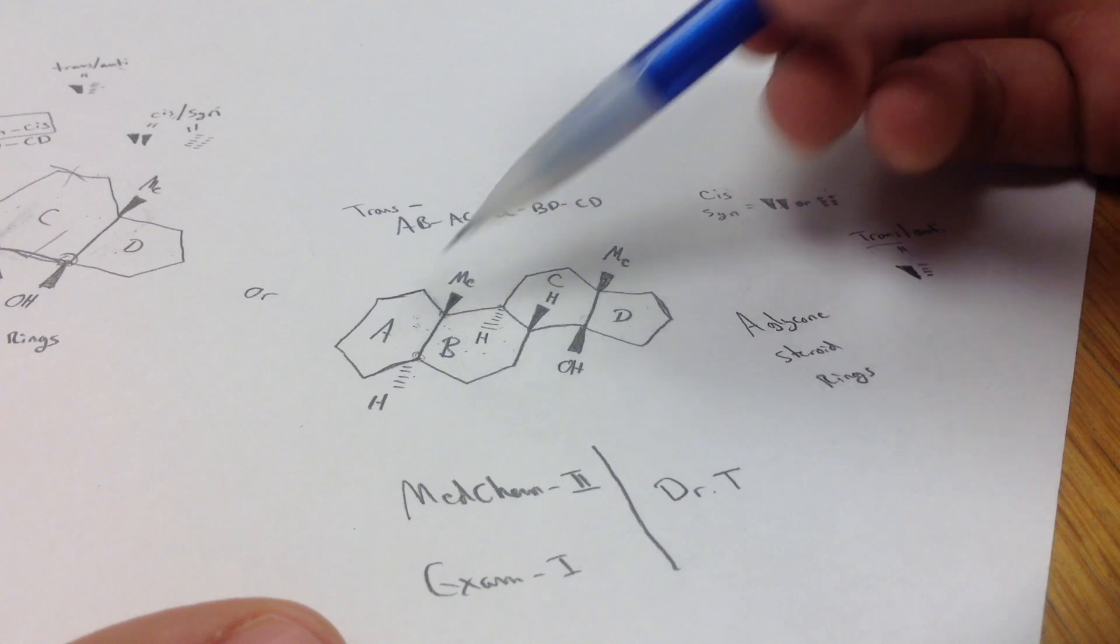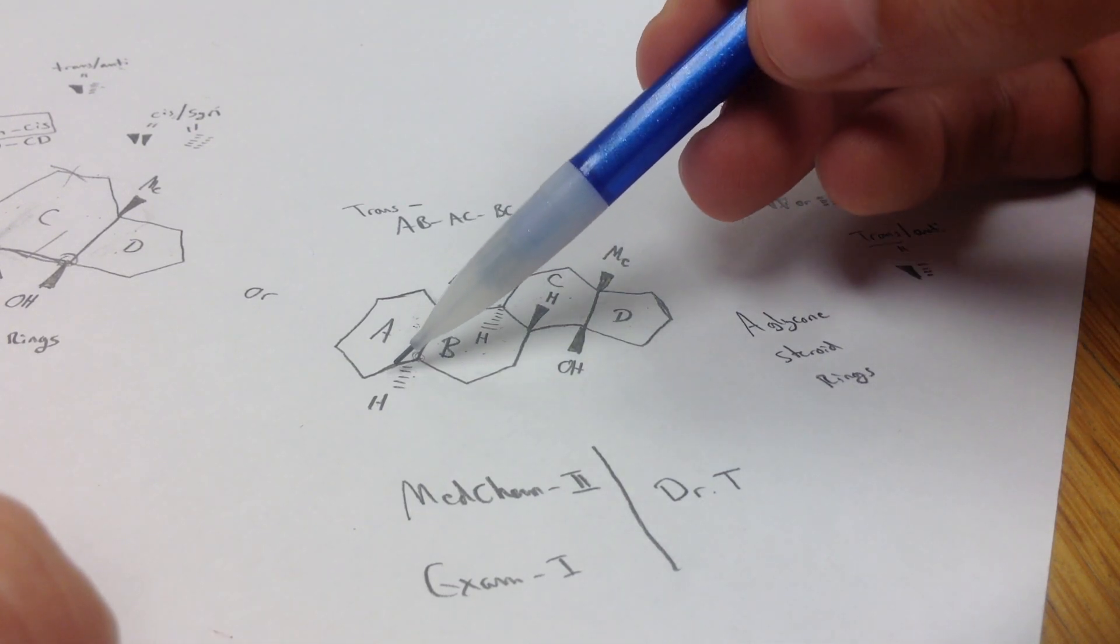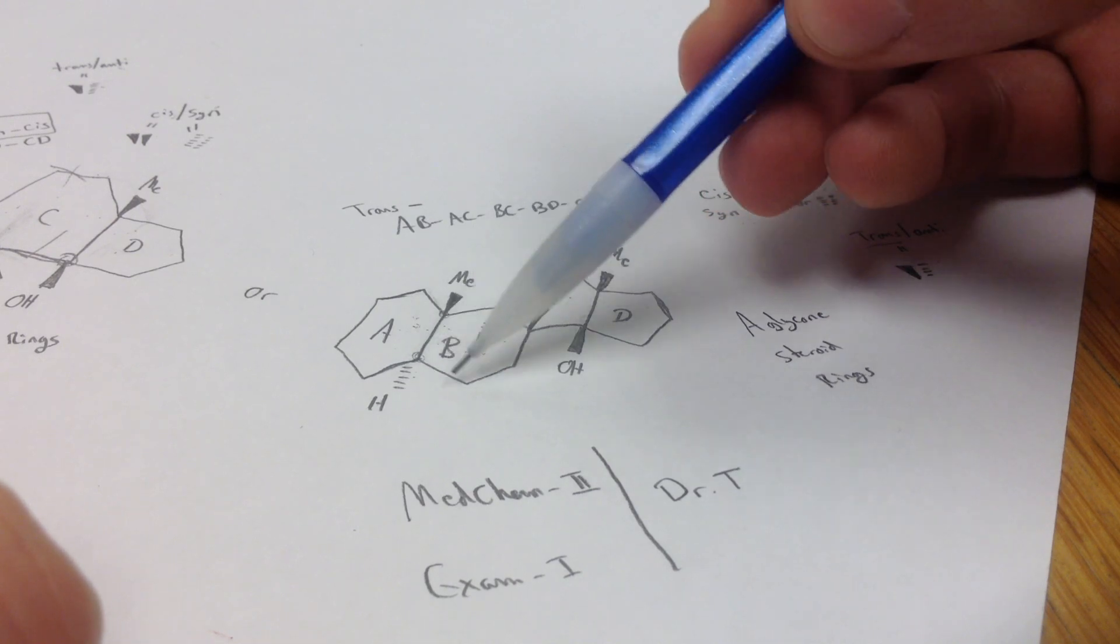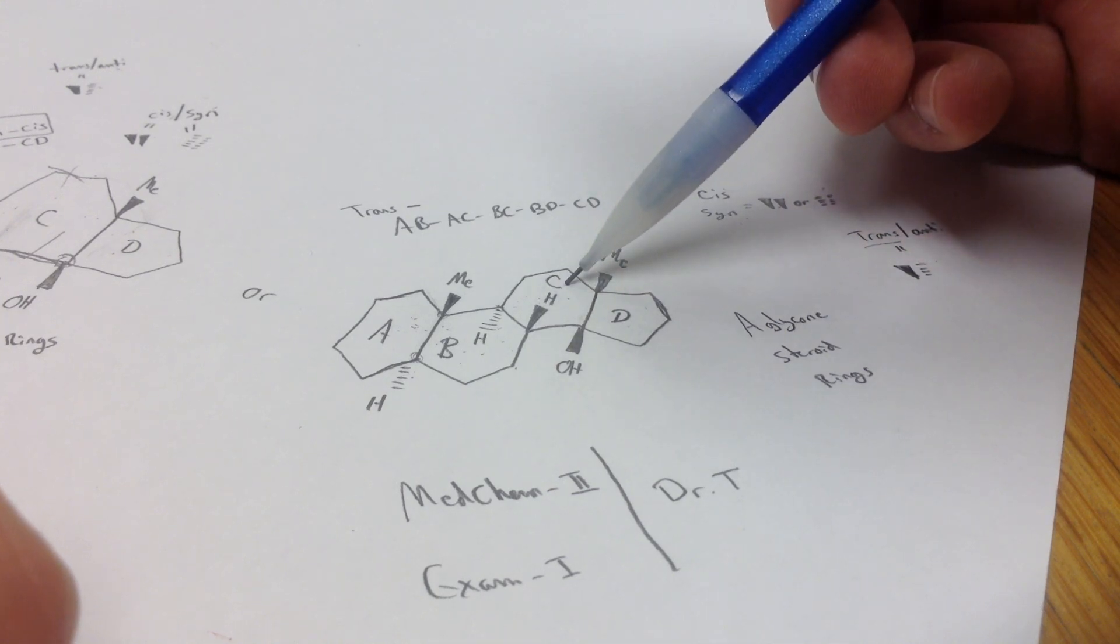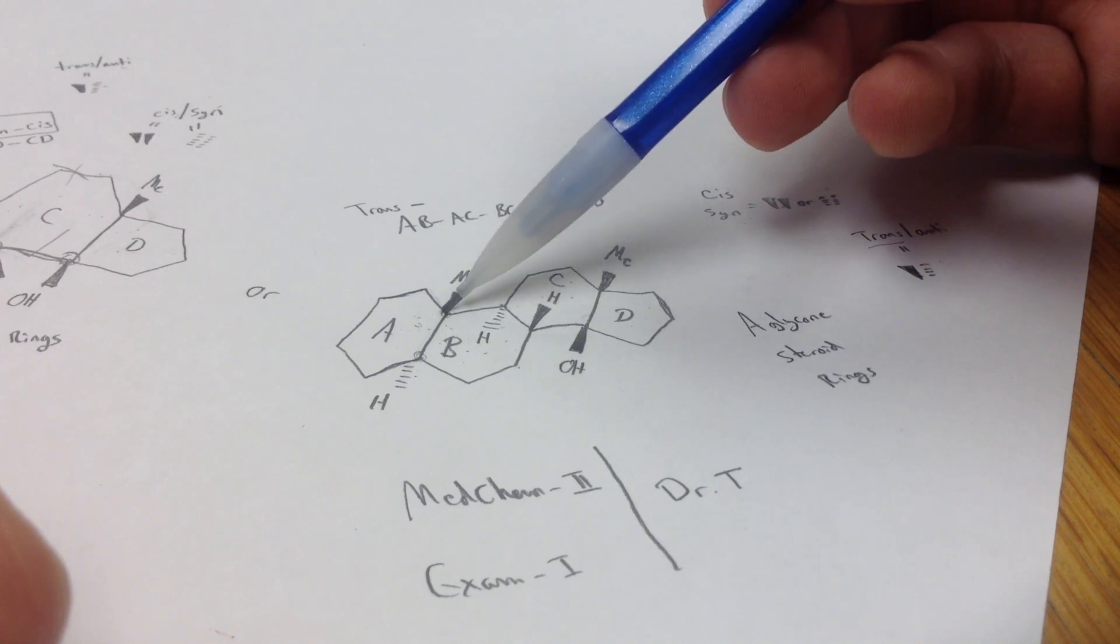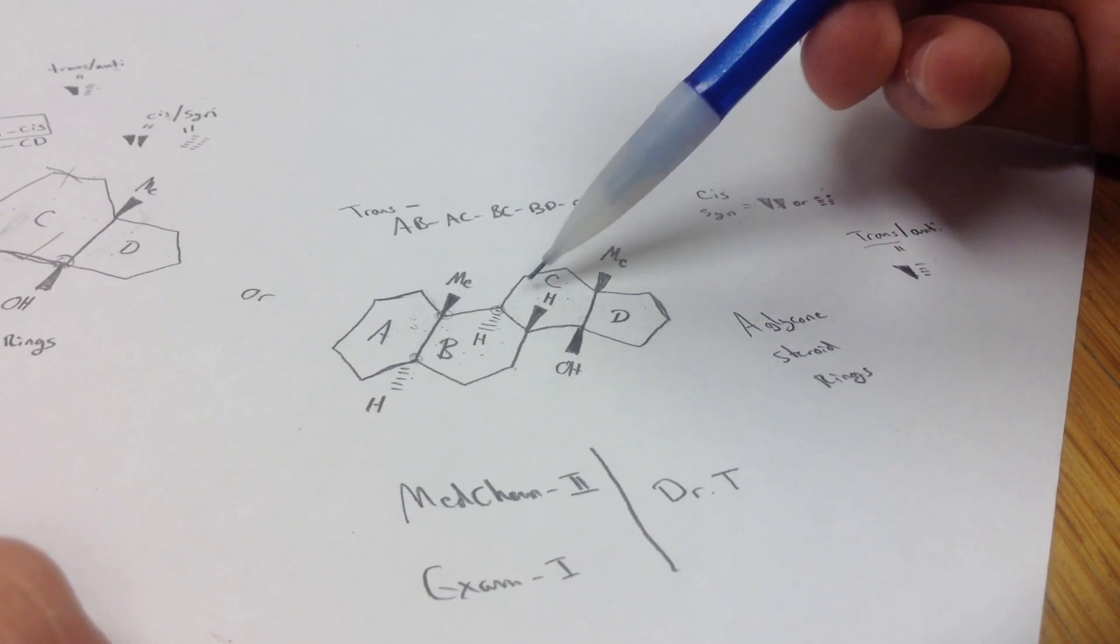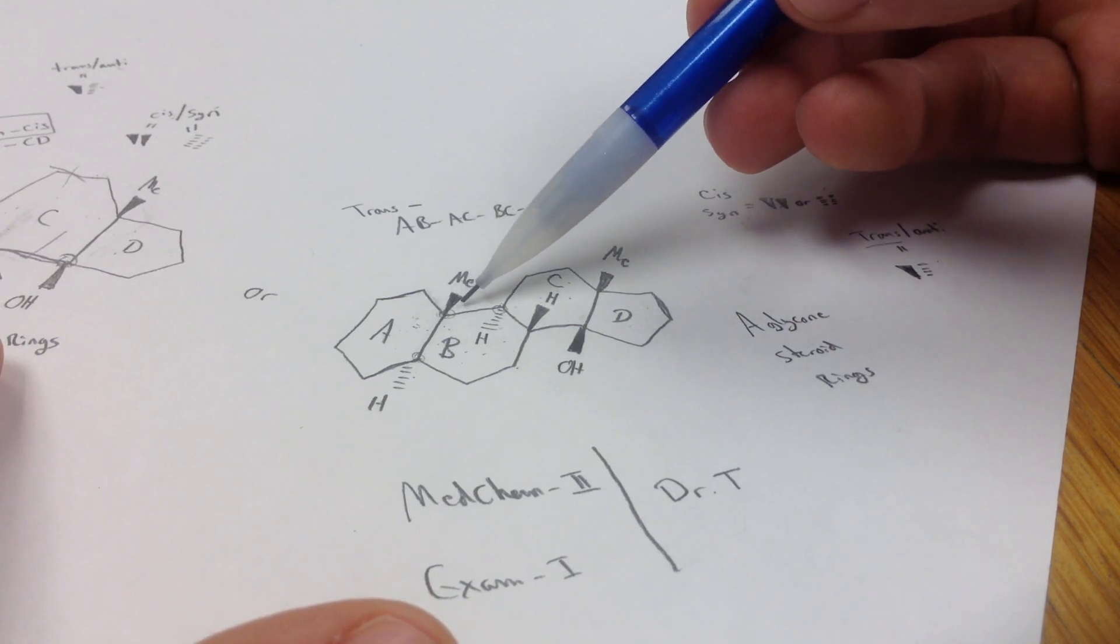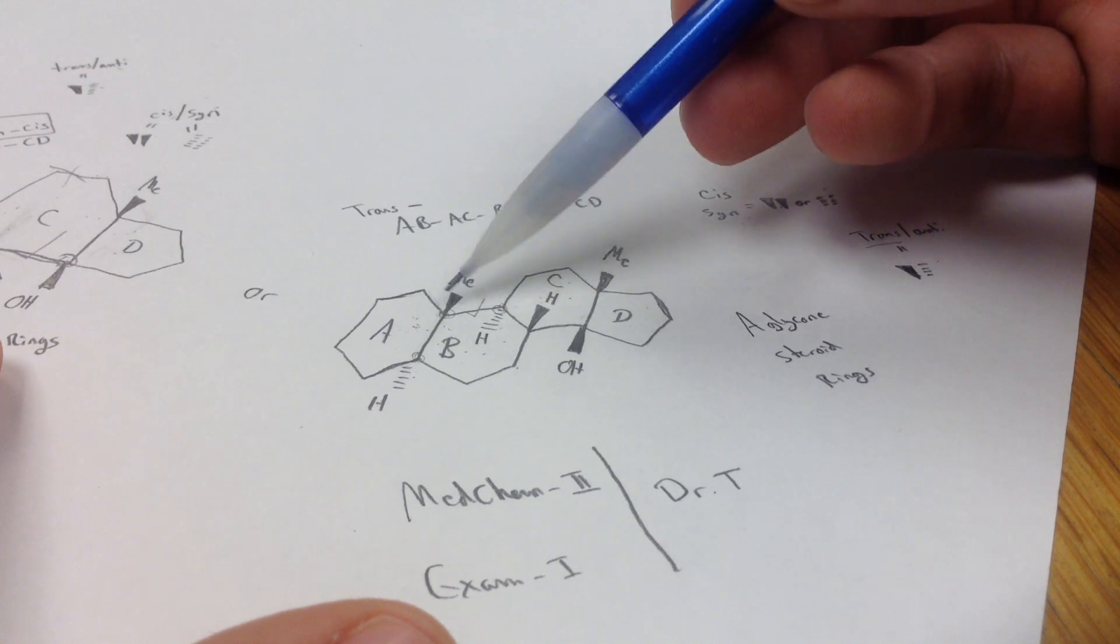Then we want to look at A and C. So there's two choices here. You can look down here. If you look down here, you have one, two, three, four carbons away, and you have this hydrogen here that's on the C ring. On the A ring, you have one, two, so it would be these two here. So you have the methyl and the hydrogen. This is also on the C ring right here. So you always want to look up here where they're closest because that's going to give us a more accurate name.